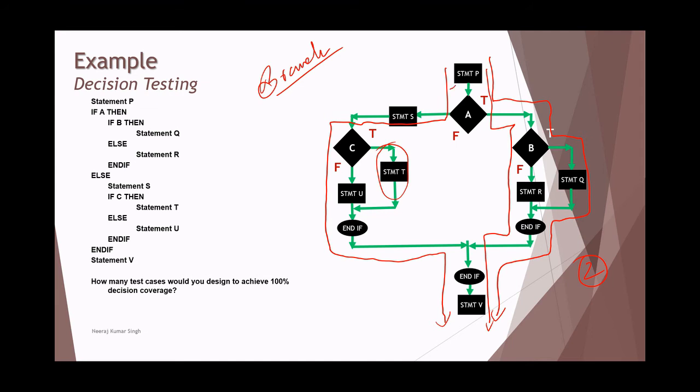But still there is a part which is not covered, so you would need another path in order to have 100% decision coverage. Now with four paths we have covered all decisions in this diagram and there's no decision or branch remaining to be covered. That's the approach which helps you define decision coverage or number of test cases required for 100% decision coverage.